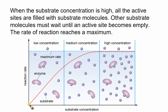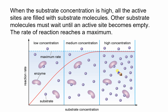In summary: as the substrate concentration increases, the rate of reaction increases, then it levels off and doesn't get any faster. This can be explained by the active sites — where substrate concentration is low there are free active sites, but as concentration increases many active sites become occupied, so the product cannot be formed any faster.